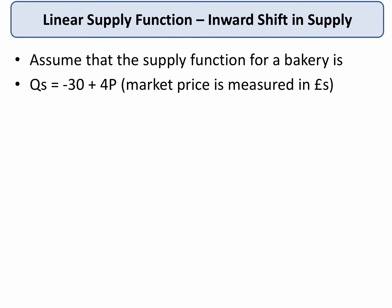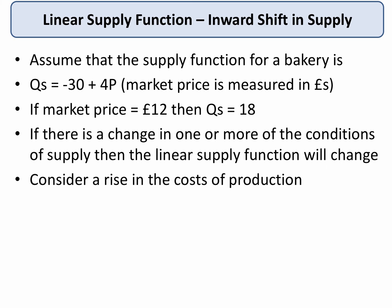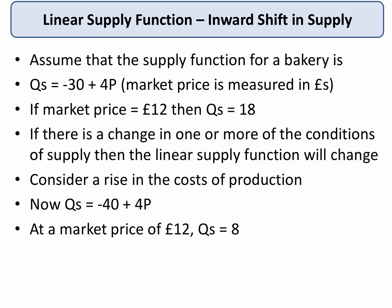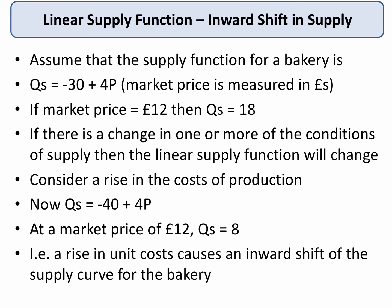There could otherwise be an inward shift. With the bakery at a price of £12 and quantity supplied of 18, now consider a rise in the cost of production — perhaps an increase in the wage rate or the minimum wage, or an increase in depreciation costs of equipment. The new formula is minus 40 plus 4P, and at a market price of £12, instead of supplying 18, now they only supply 8. An increase in the unit cost of supply has caused an inward shift of the supply curve for the bakery.